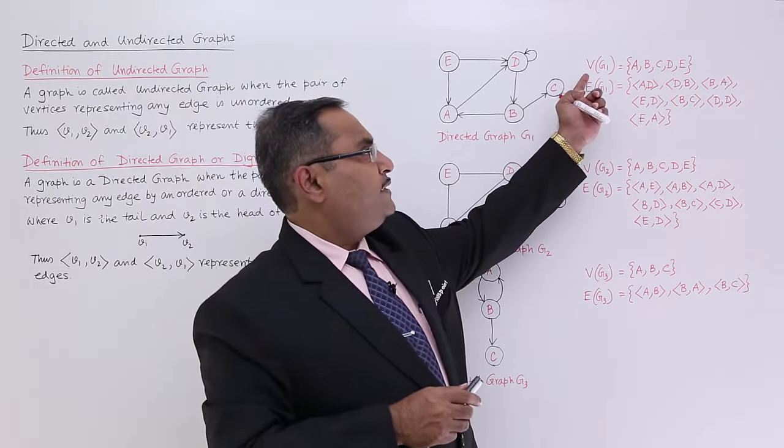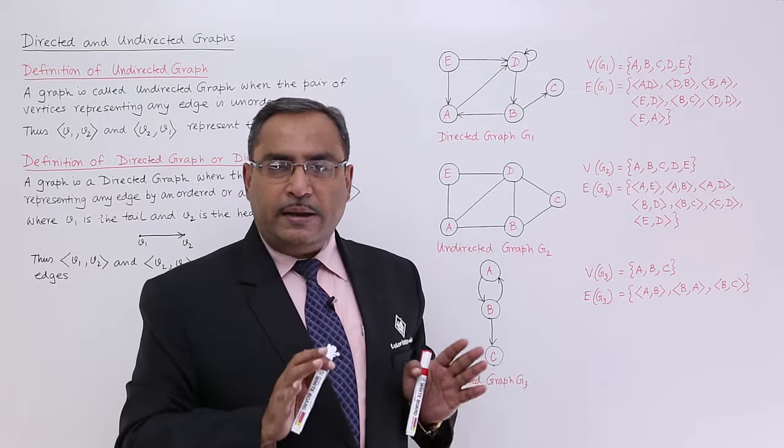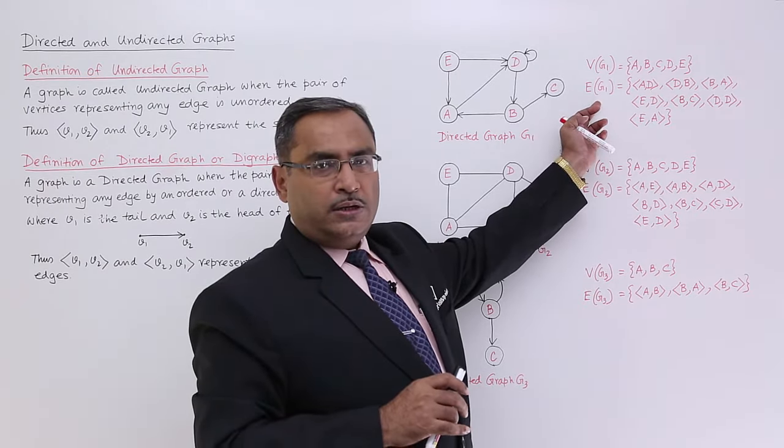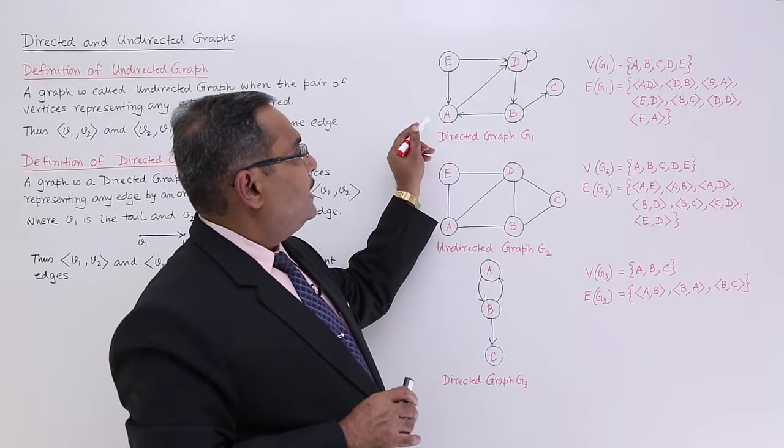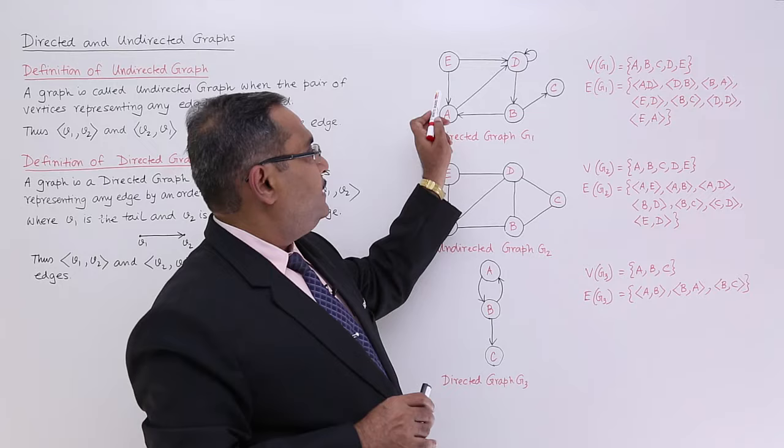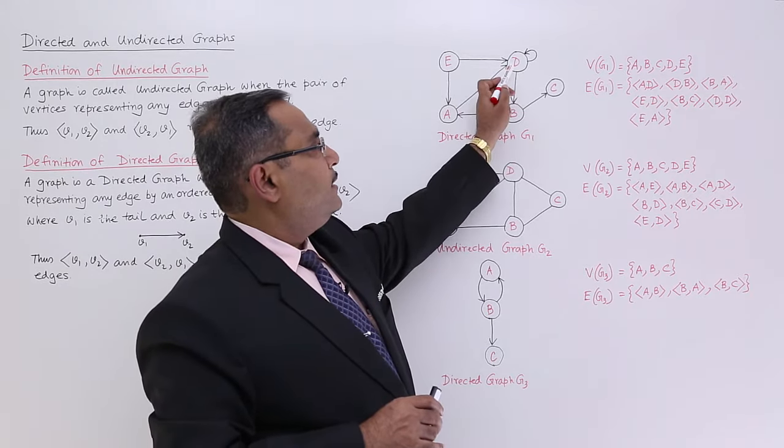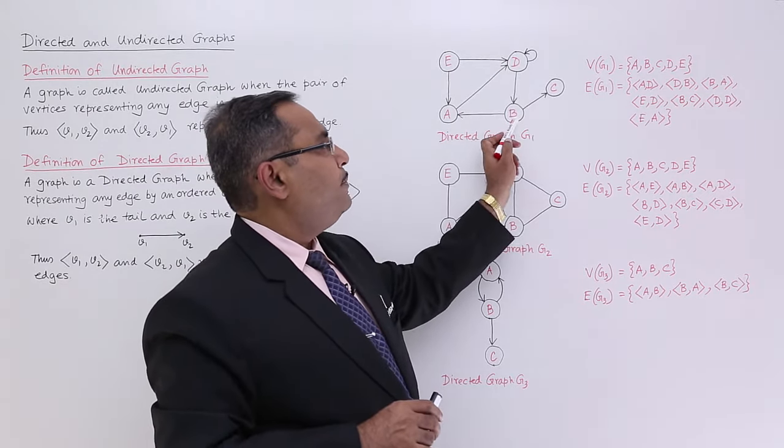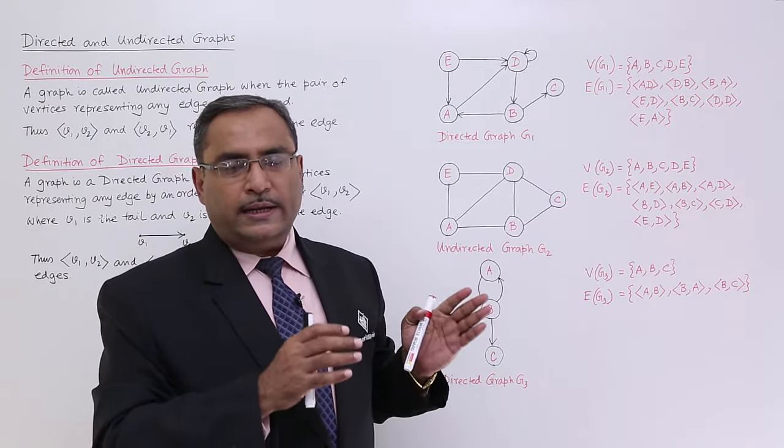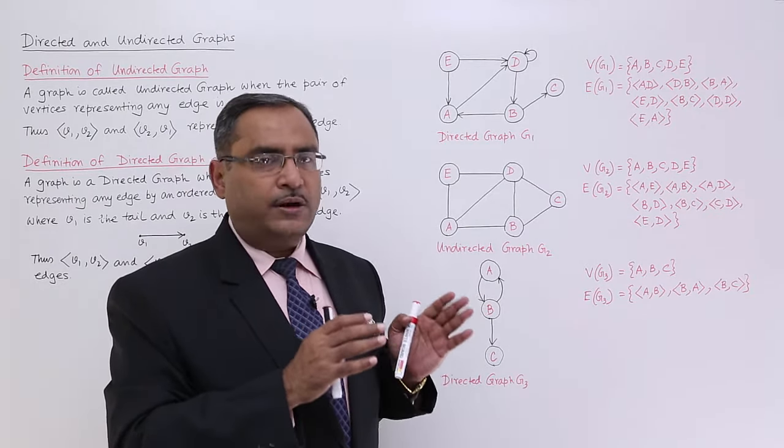So this graph consists of set of vertices, they are nothing but A, B, C, D, E, and set of edges of G1. So we can have this one as AD, BA, EA, DD, and BC. So I have written the same within curly braces to denote that it is a set of edges or branches.